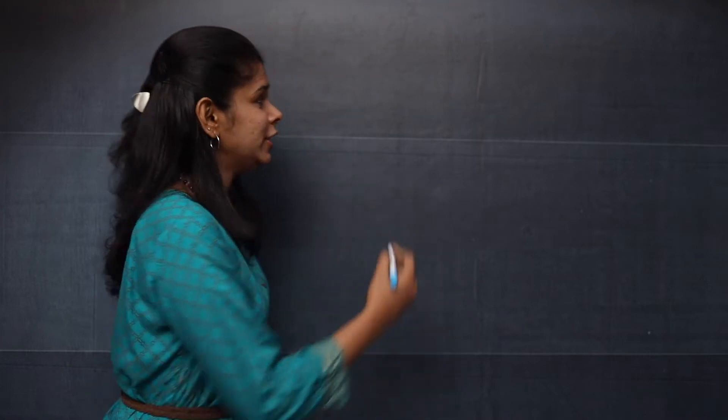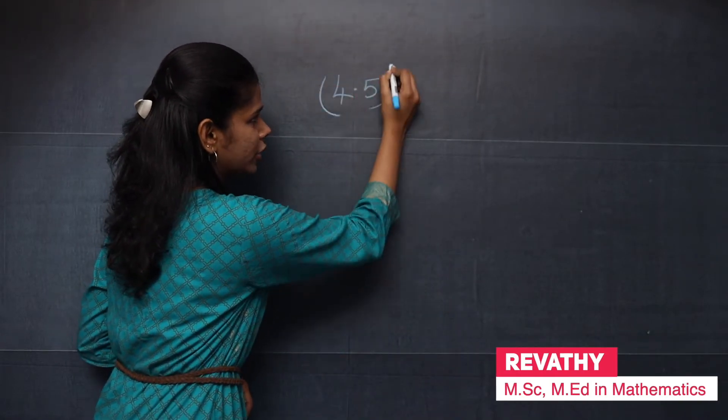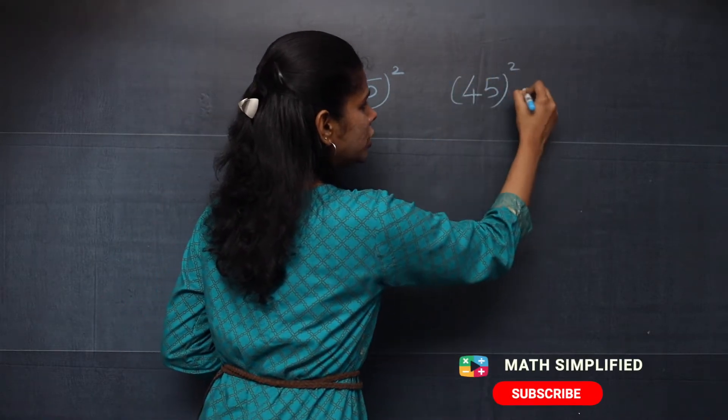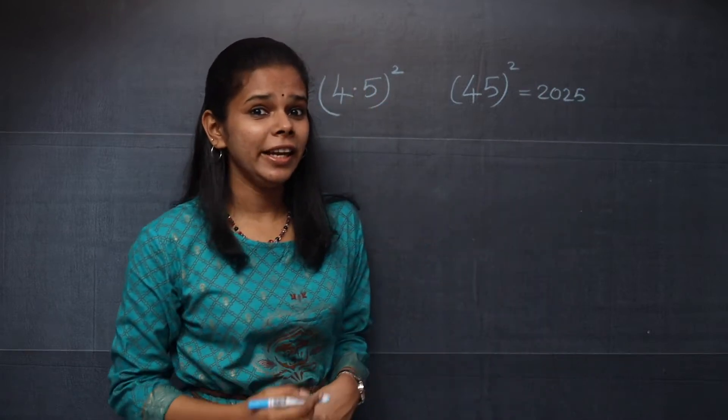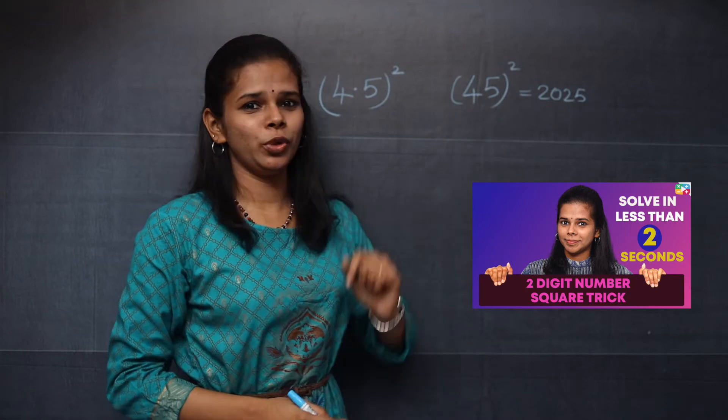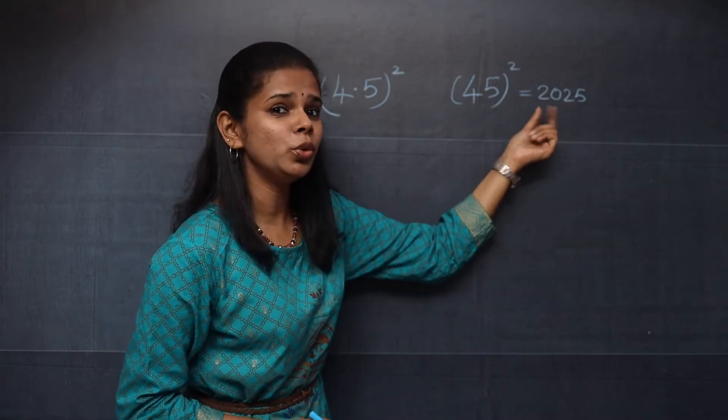Let's see how to find 4.5 whole square. You know 45 square is 2025. I will be giving the link in the description box to find the square of any two-digit number quickly. With that method, I got the answer 2025.